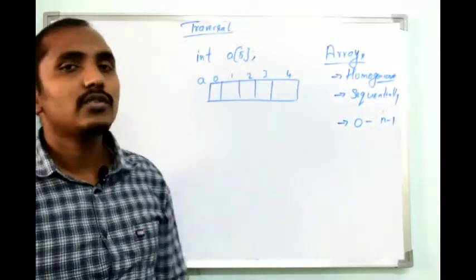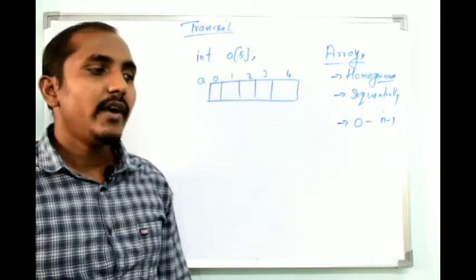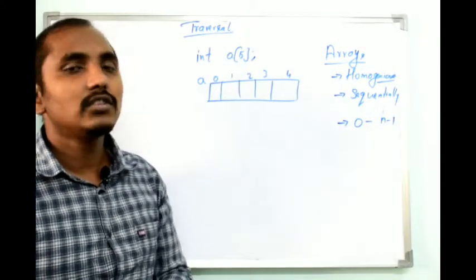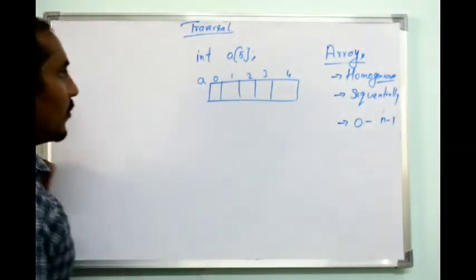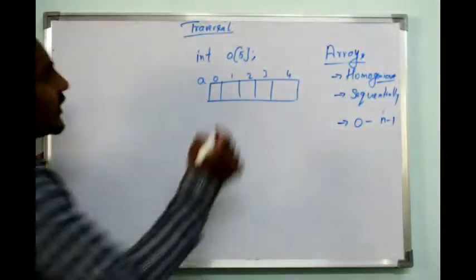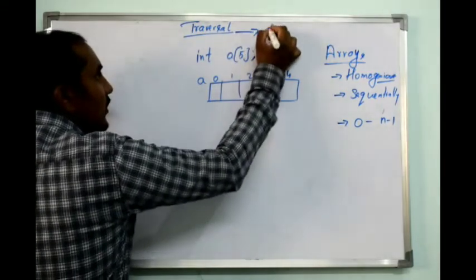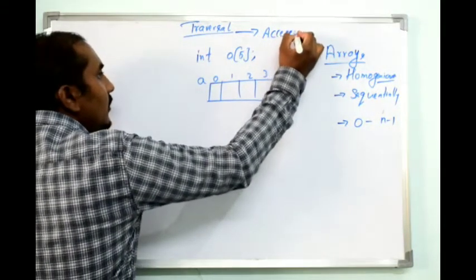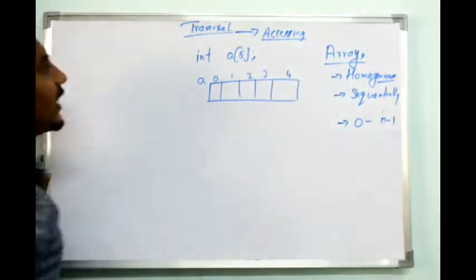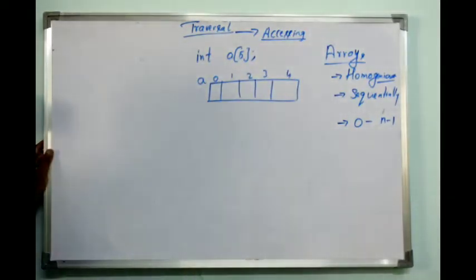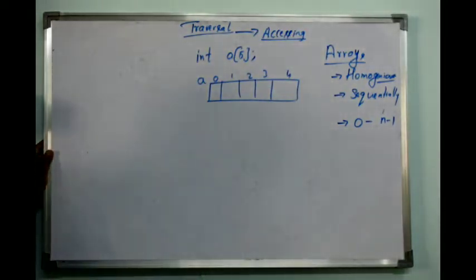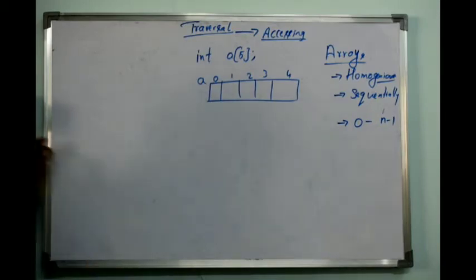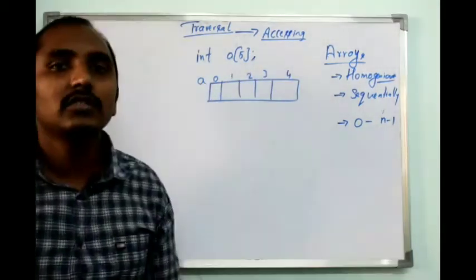The number of elements I can store is 5, representing 5 elements. When I say traversal, traversal is nothing but accessing the data elements in the data structure. Traversal is the process of accessing the elements from the data structure.